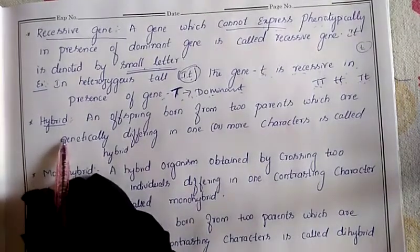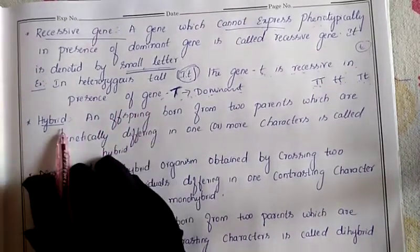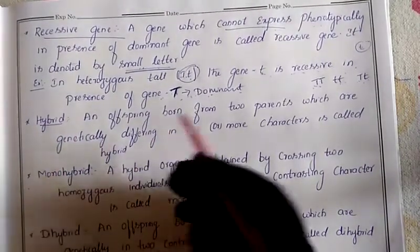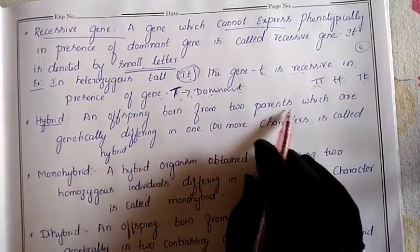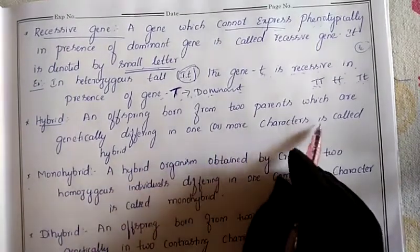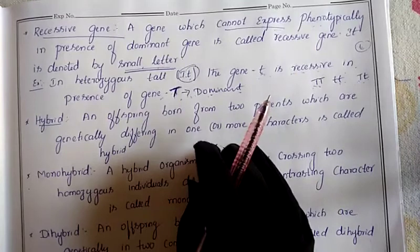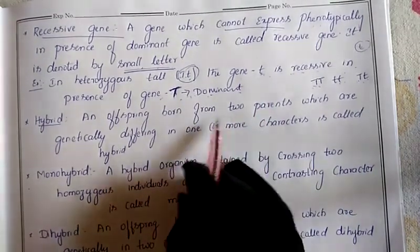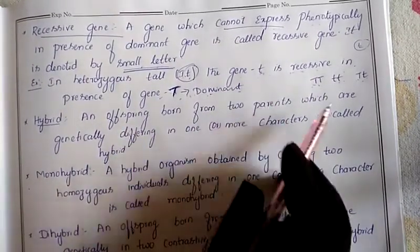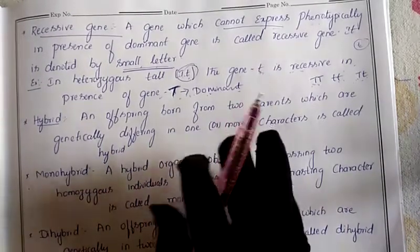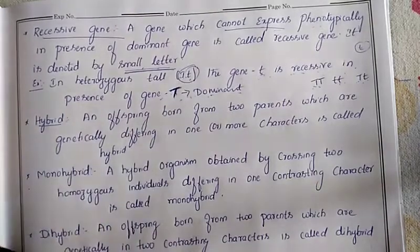Next let us discuss the term hybrid. Offspring which we get from the parents we are calling as a hybrid - that means young ones we call hybrid. Offspring born from two parents which are genetically different in one or more characters is called a hybrid. So hybrid means the offspring, the child which we get from two parents - if the child has genetic differences compared to their parents, we call them a hybrid.